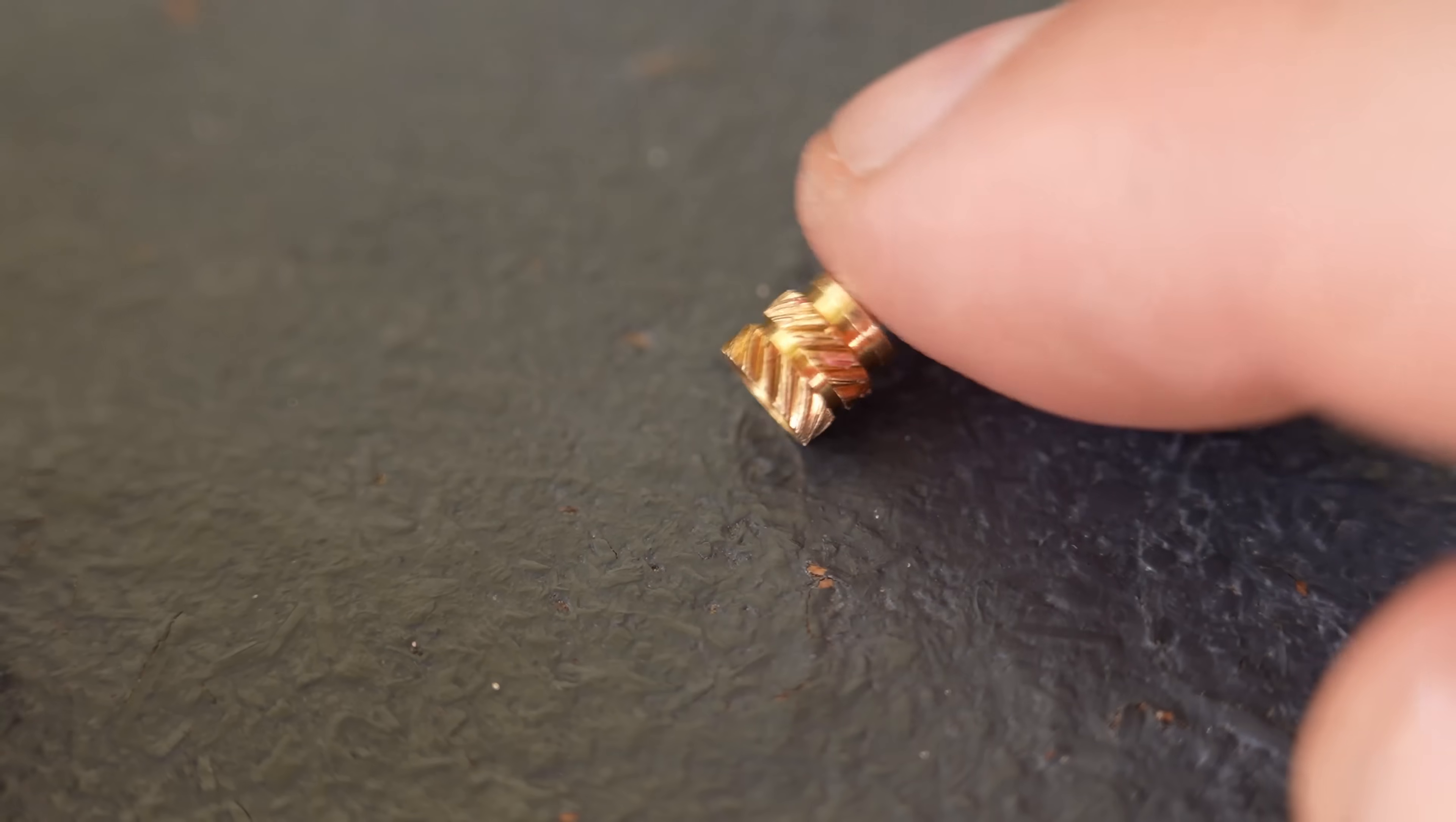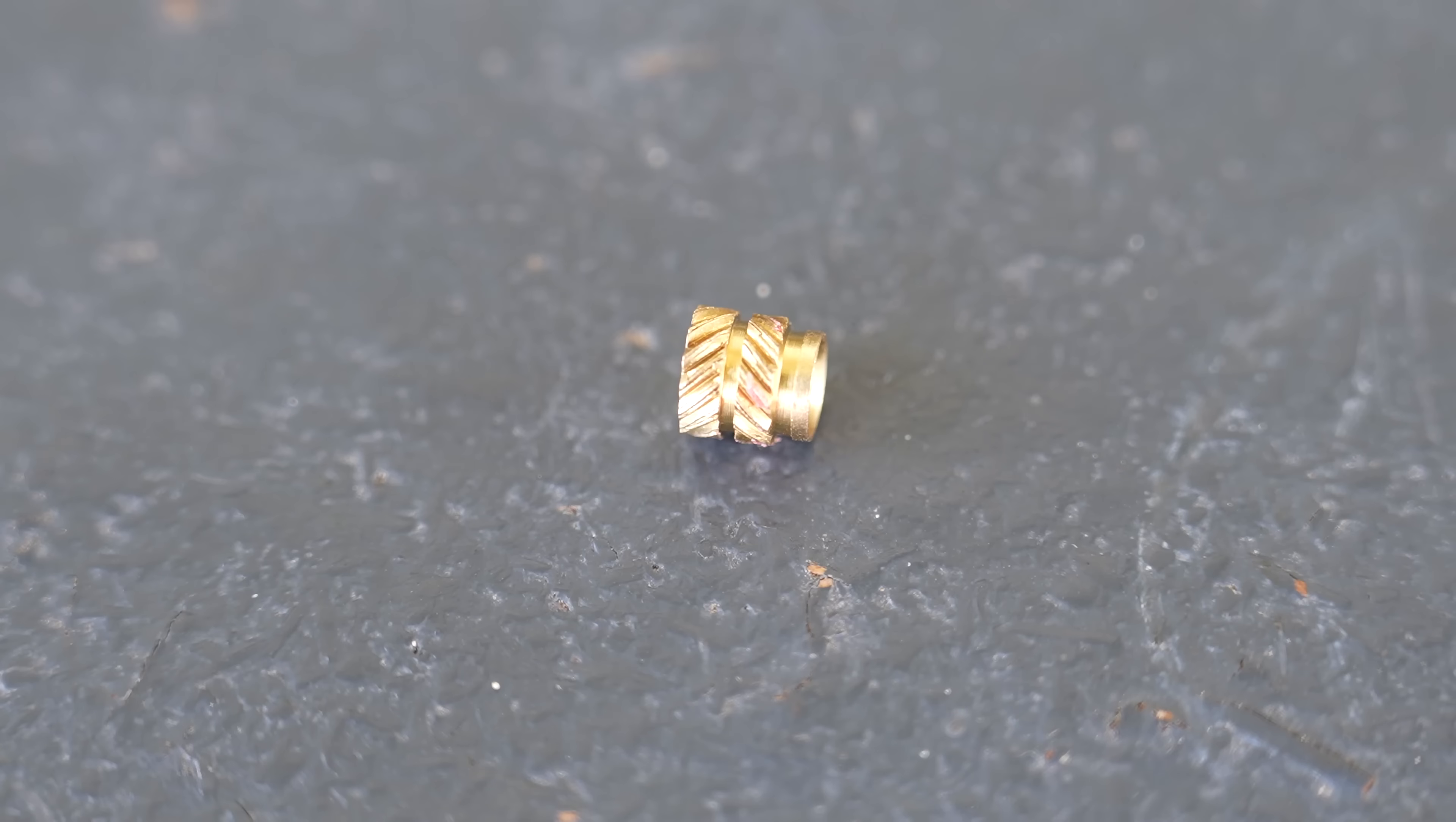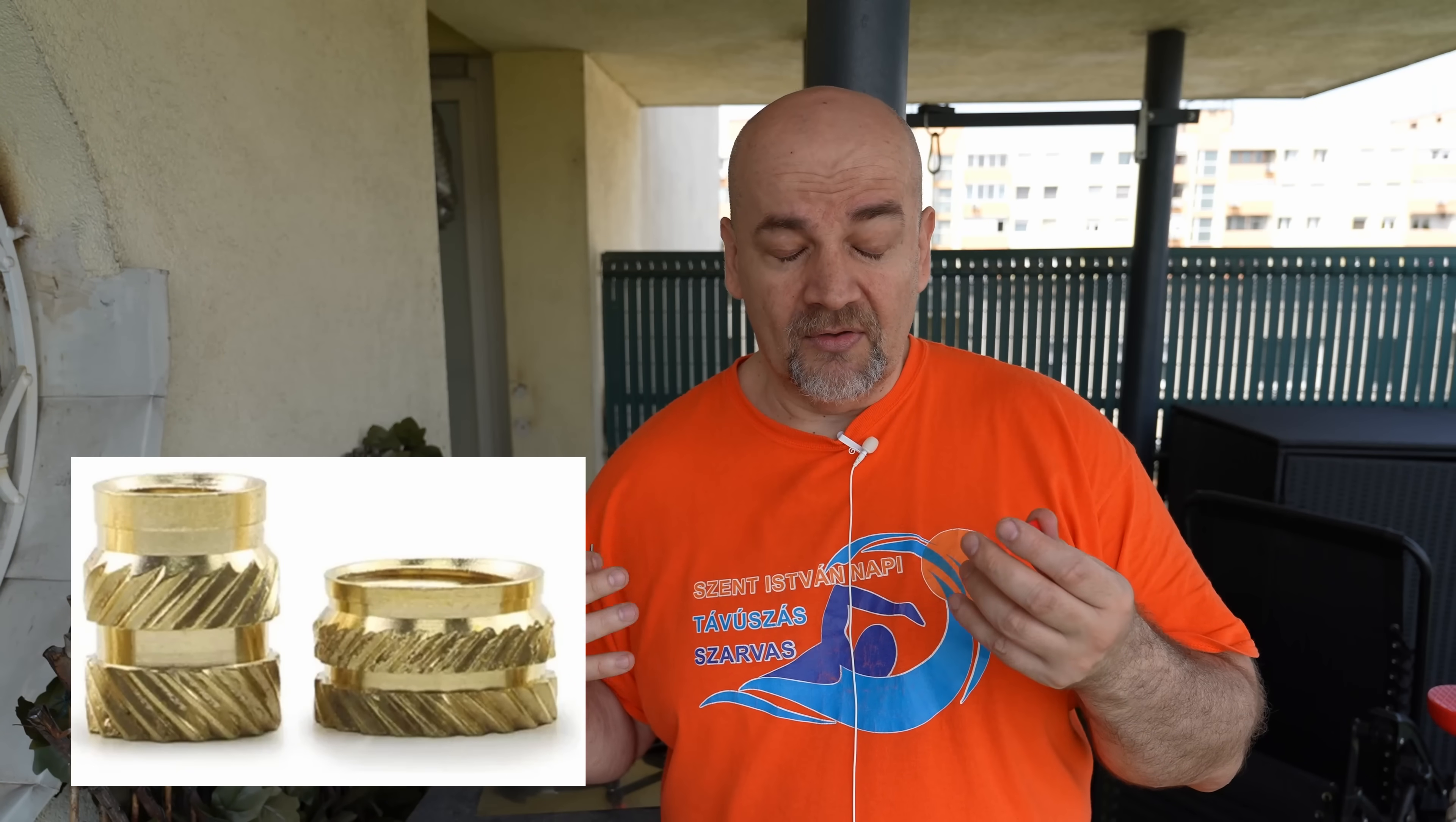Interesting data. First I'm surprised with how big force we need to pull out these threaded inserts. But on the other side how small torque is enough to pull them out. Now these are one of the smallest M3 threaded inserts I could buy. 5 mm in diameter and the total length is also 5 mm. There are bigger ones too and maybe I should upgrade because in some applications this torque may be not enough.